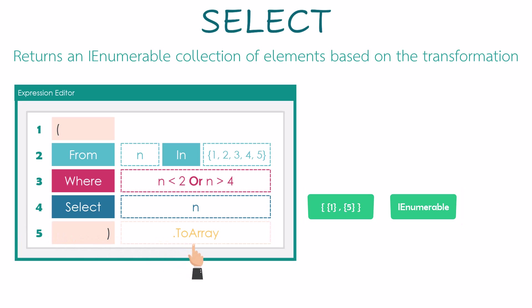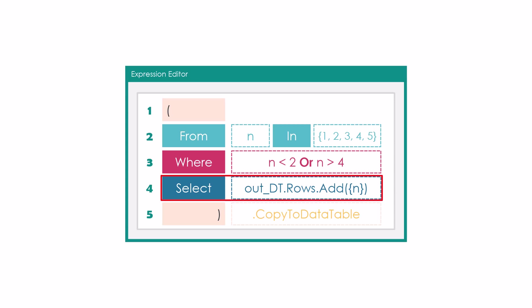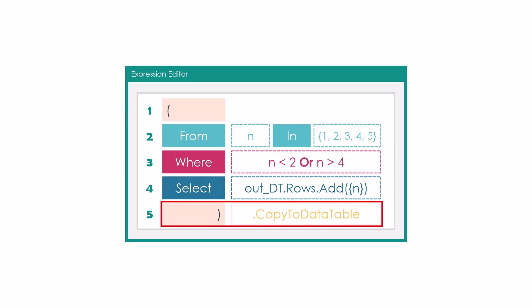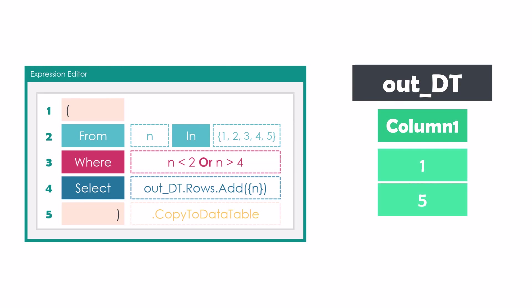After the query I added the ToArray function to convert the IEnumerable collection to an array variable — so I get the filtered result as an array. In the second example, instead of selecting data in the same form, I want to select the numbers and add them into a data table. The select operator now has a new calculation — each number that meets the condition is stored as a row in a data table, and I use CopyToDataTable to convert the output. The result is the same data, but now in a data table form instead of an array.